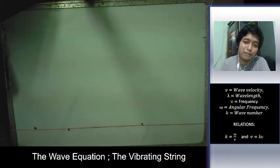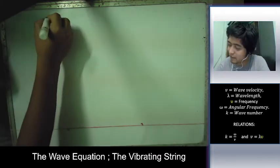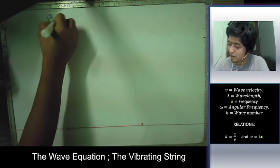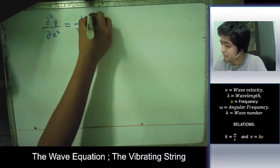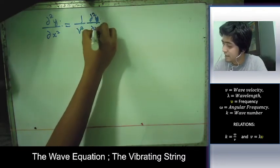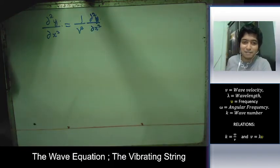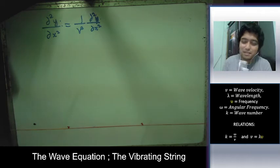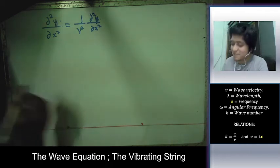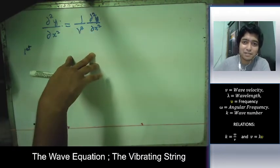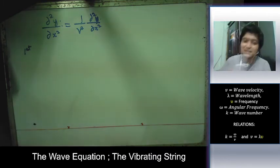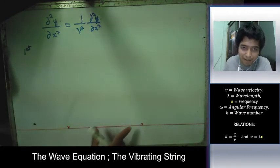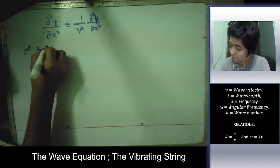Today we are going to talk about the wave equation of the vibrating string. The wave equation is given by the partial differential equation ∂²y/∂x² = (1/v²) ∂²y/∂t². The position or vibration depends on x as well as time.